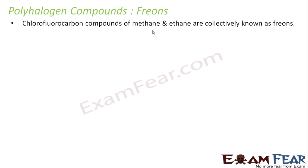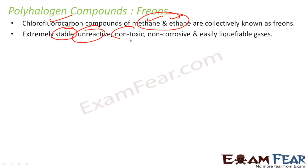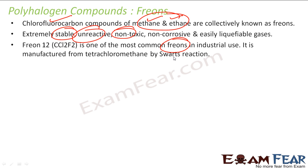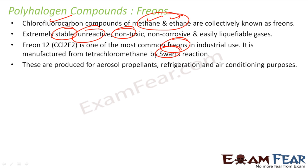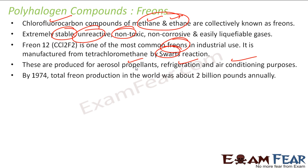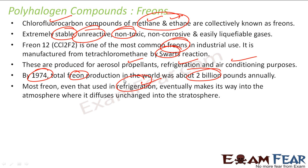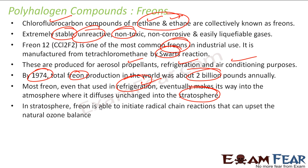The next compound is freons. Freons are chlorofluorocarbon compounds of methane and ethane, collectively called freons. They are very stable, unreactive, and non-toxic. However, since they are very stable, once they enter the system it is very difficult to decompose them. They are commonly used in industrial applications and are formed by a Swarts reaction. They are used in refrigeration, air conditioning, and as aerosol propellants. By 1974, total freon production was around 2 billion pounds. Freons rise to the stratosphere and disrupt the ozone layer balance by starting a chain reaction.